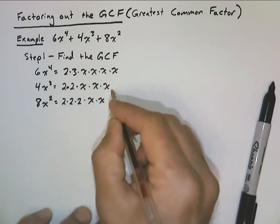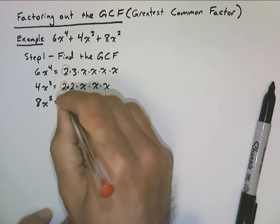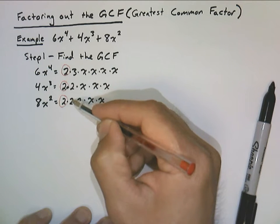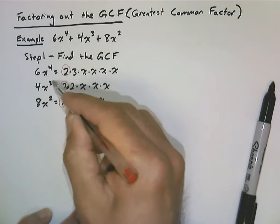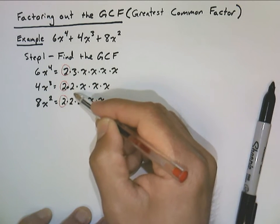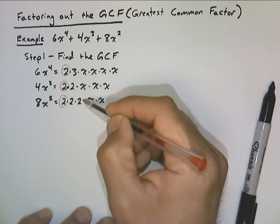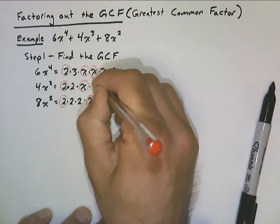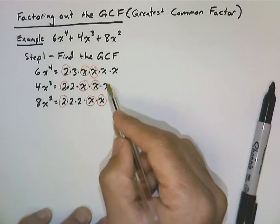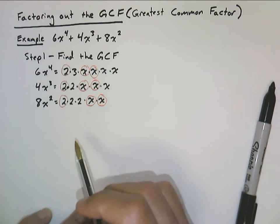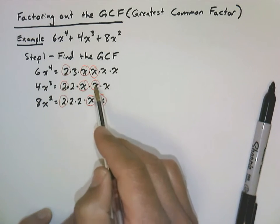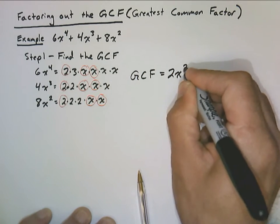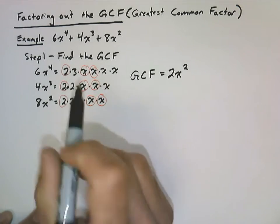Now we want to look at the common factors in all three terms — the product of all those common factors is going to be the GCF. Notice that all three factorizations have a factor of 2. These two terms also share another factor of 2, but there isn't another one in the first term, so we don't have a second common factor of 2. The first term has a factor of 3, but there's no 3 in the others. All three terms share an x, and they all share another x. So each of these terms has a 2x squared in them. That's the GCF for these three terms.